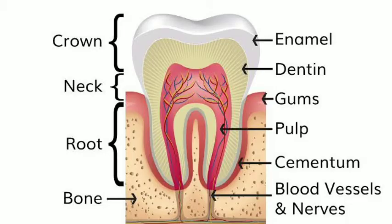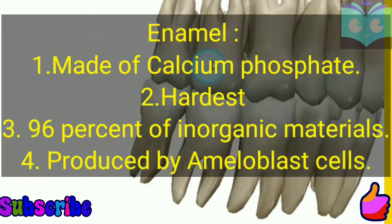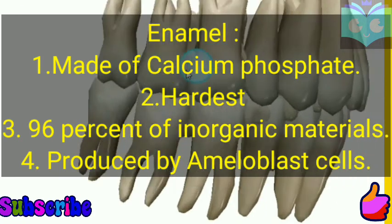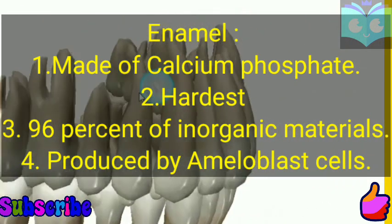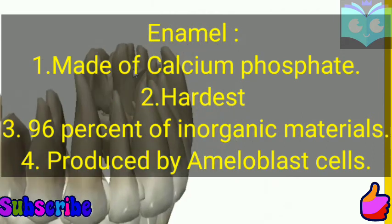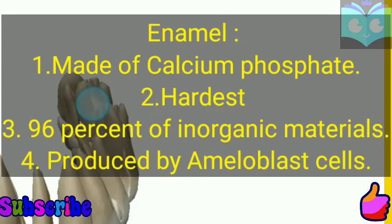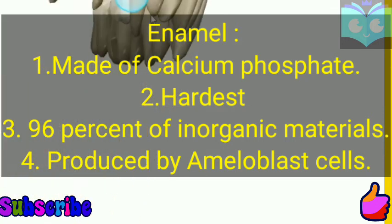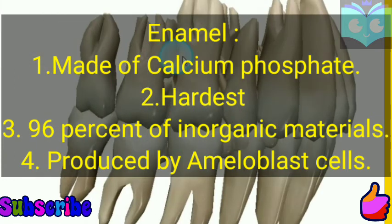Enamel is made up of calcium phosphate. It acts as a hard protective covering of the teeth, protecting the dentine and inner blood and lymph vessels. It is produced by ameloblast cells and is also the hardest substance in the body, made up of up to 96% inorganic materials.